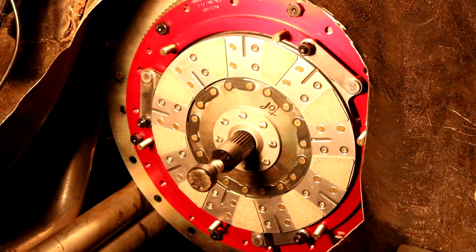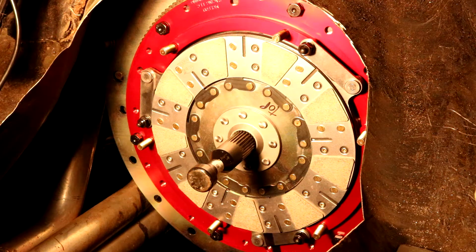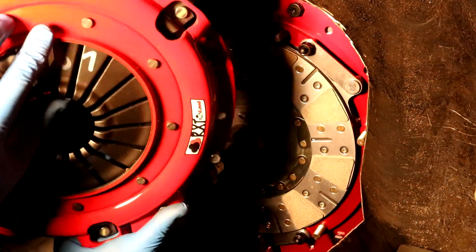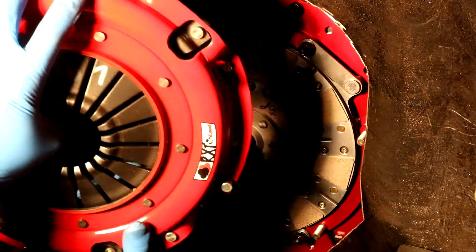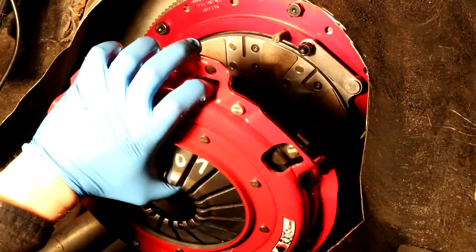So with the second disc on, I can now put on the pressure plate portion of the clutch. Just line up the stripes, which are right there, with the ones on the adapter plate and you are in the correct orientation.